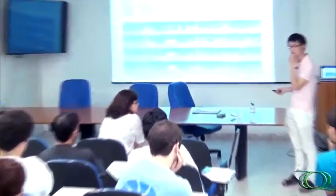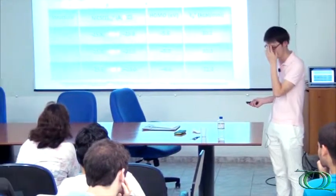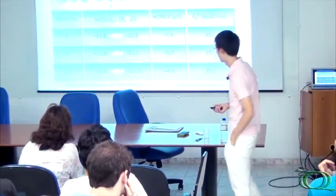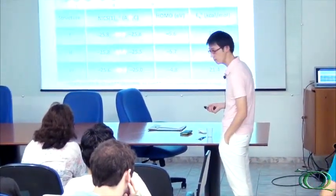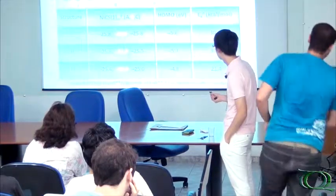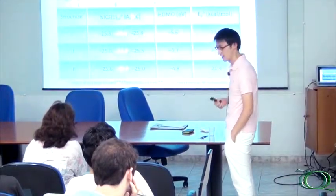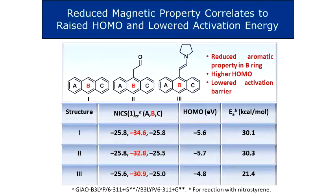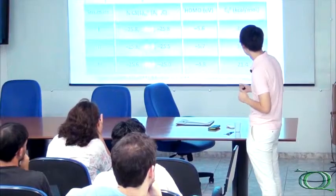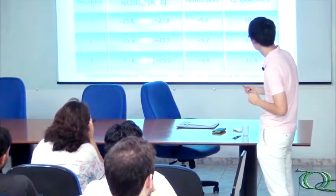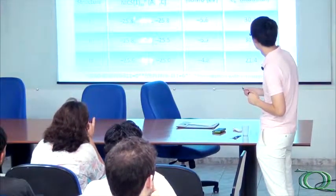This is one of the questions we address in this slide. We show that the B cycle is more aromatic than the others, because the more negative the value, the higher the degree of aromaticity. So if you have a positive value for A and C, then B is more aromatic than A and C.